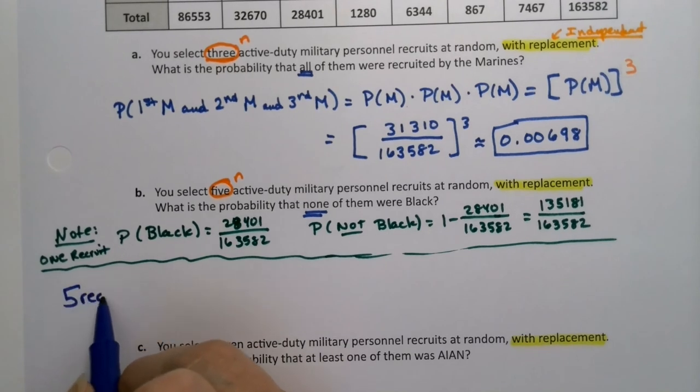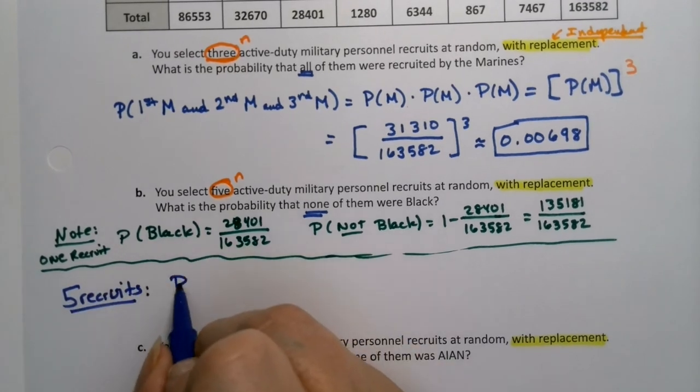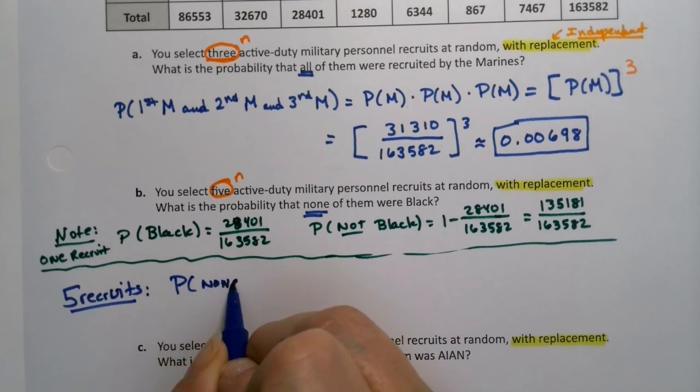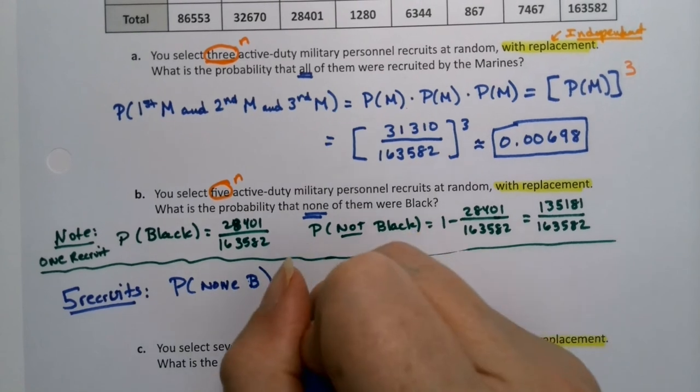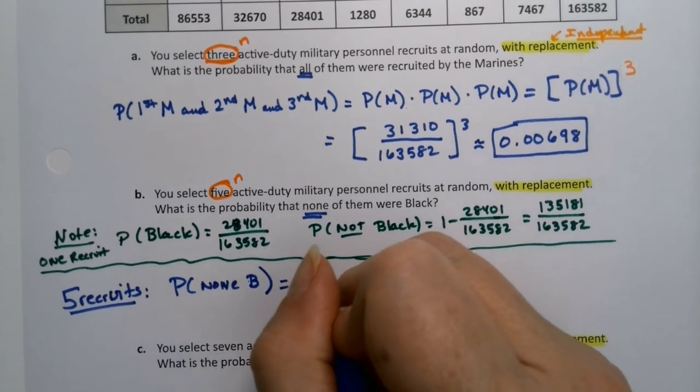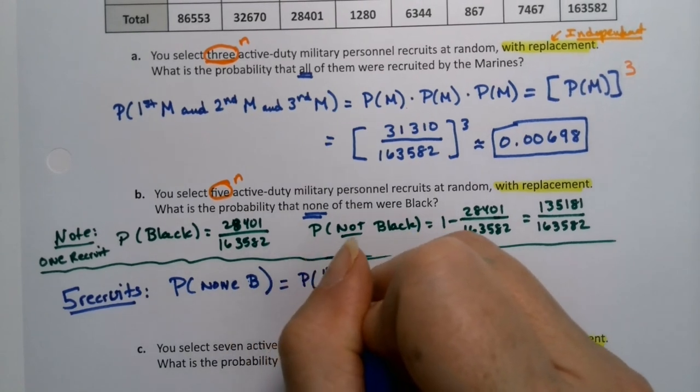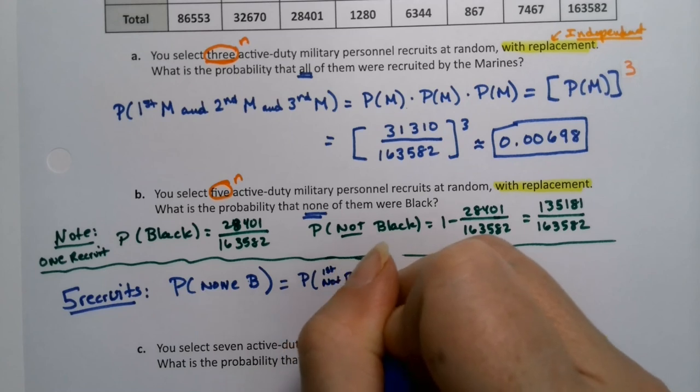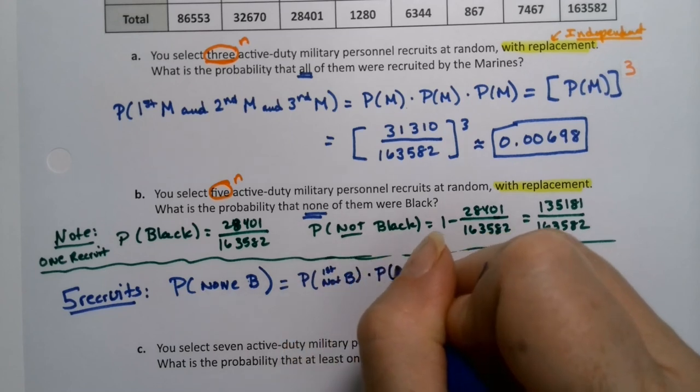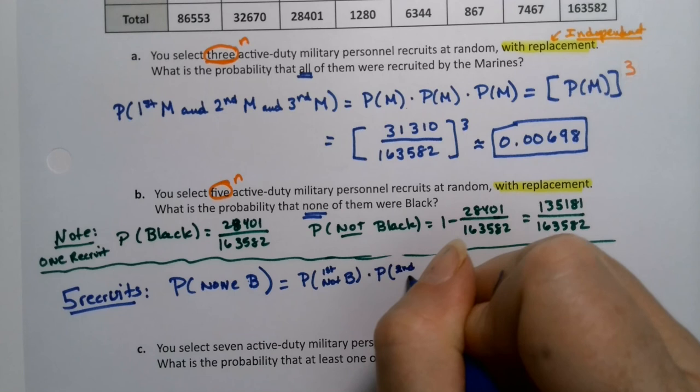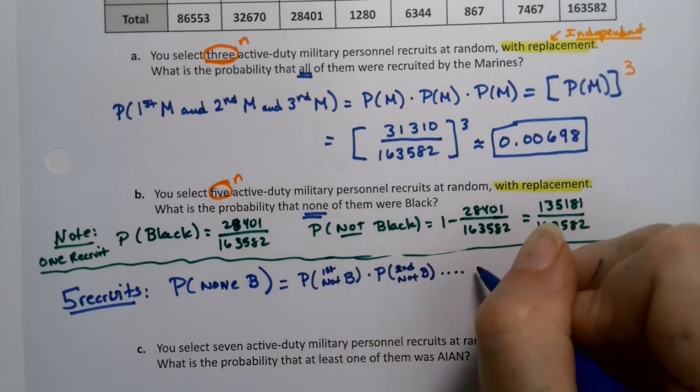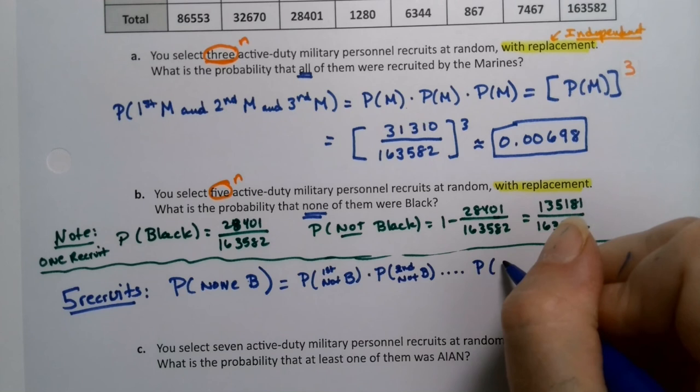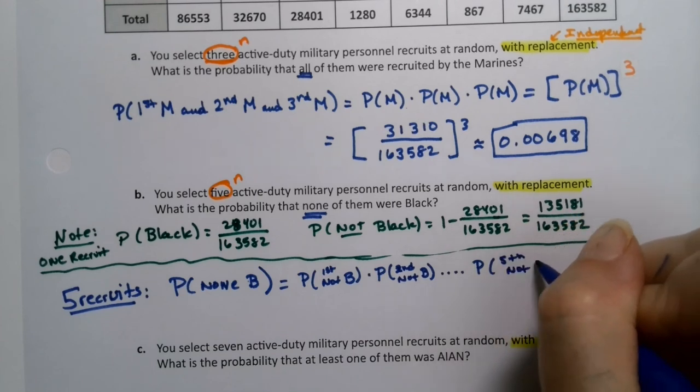Now we have to go do the problem they were asking, which is for five recruits. What's the probability that none are black? I'm just going to use B here. So that would be the probability that the first one is not black times the probability that the second one was not black, and it would just keep going. Third one, fourth one, so the fifth one is not black.